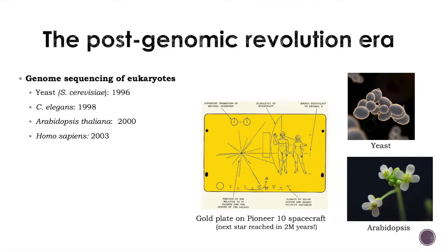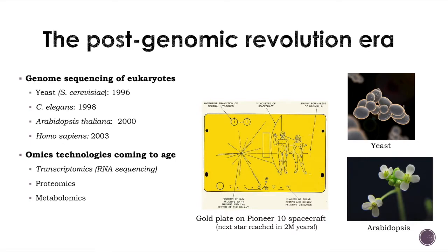This sequencing made it possible to study the organism at several levels, and for that we had omics technologies that came to the fore based on genome sequencing. We first had transcriptomics — which is what this video is about — then proteomics, the study of all proteins in an organism, and metabolomics, which measures simple or complex metabolites. Finally, genome sequencing also enabled mathematical modeling of the whole organism, using all genes, proteins, and metabolites together in genome-wide models — the field of systems biology.